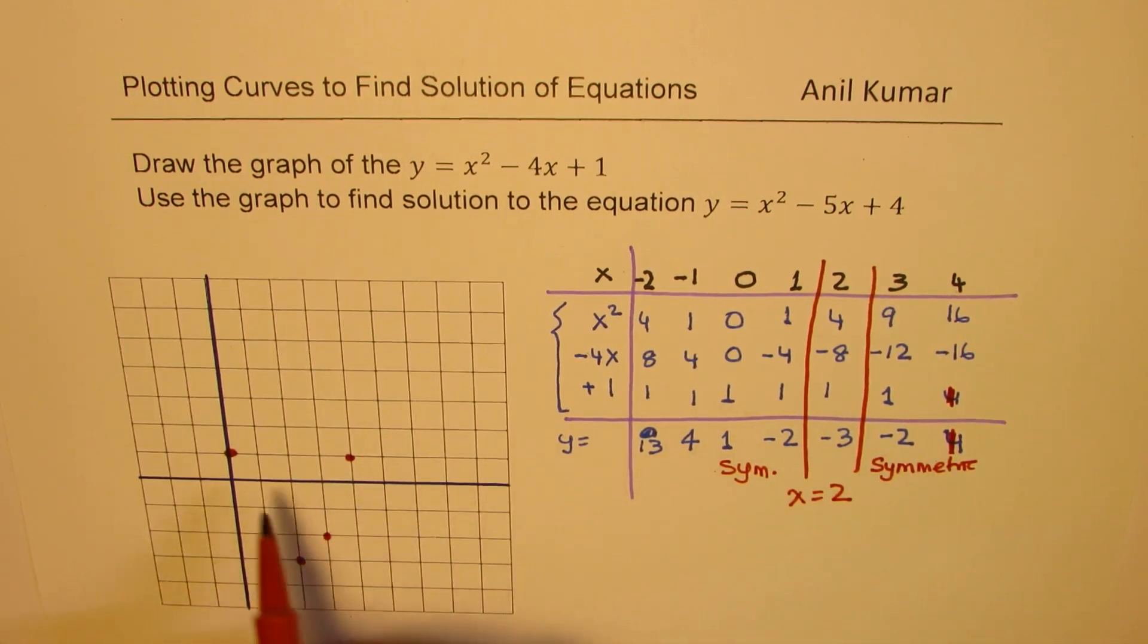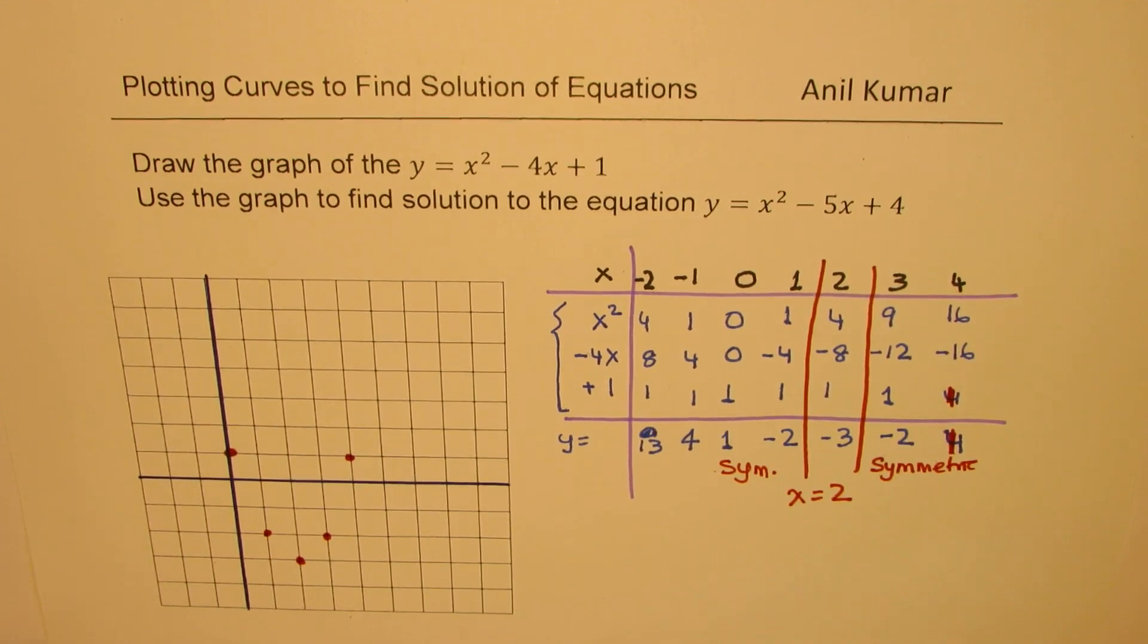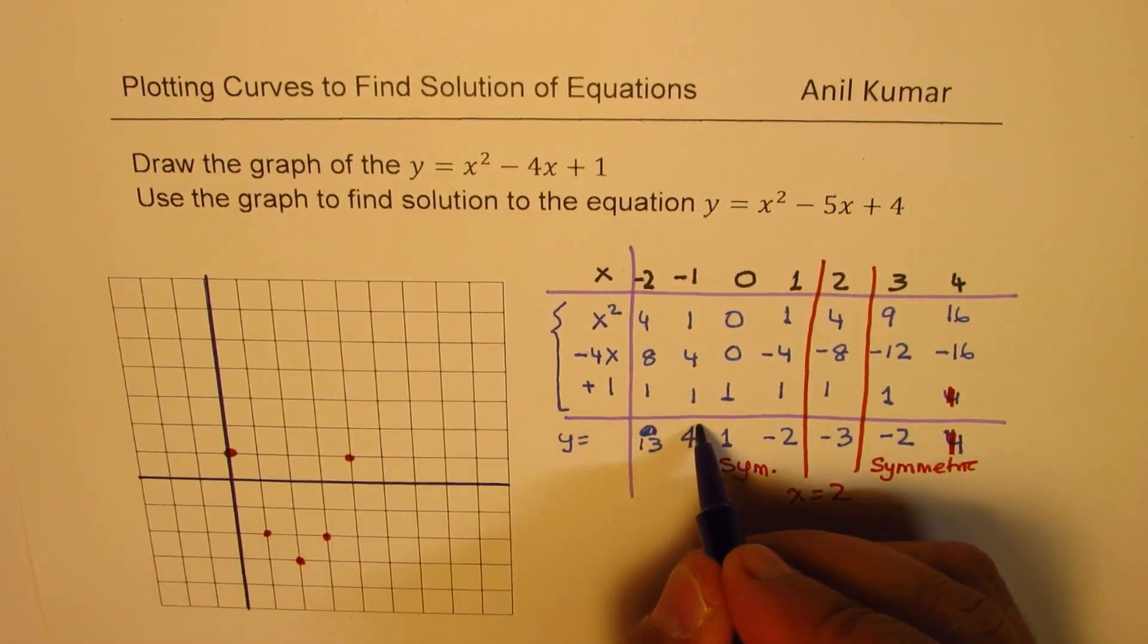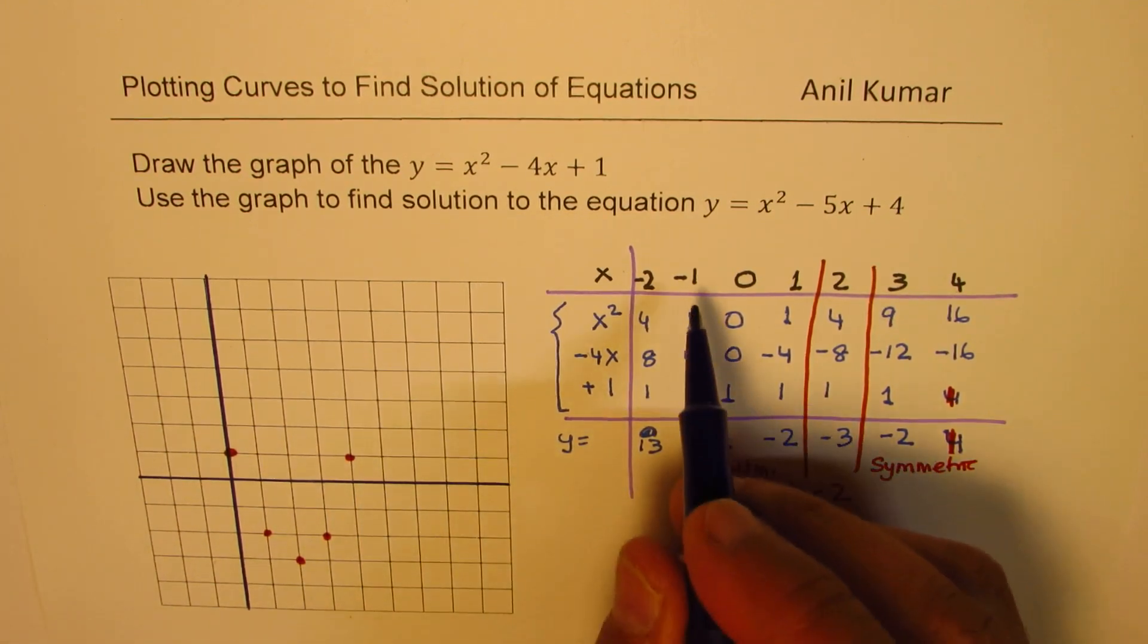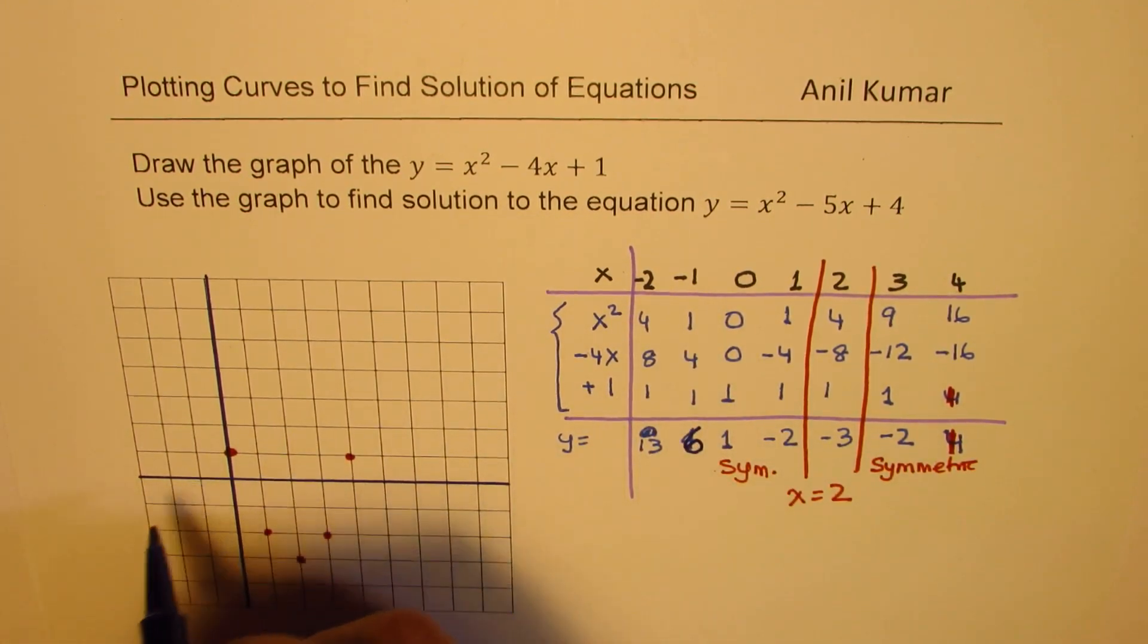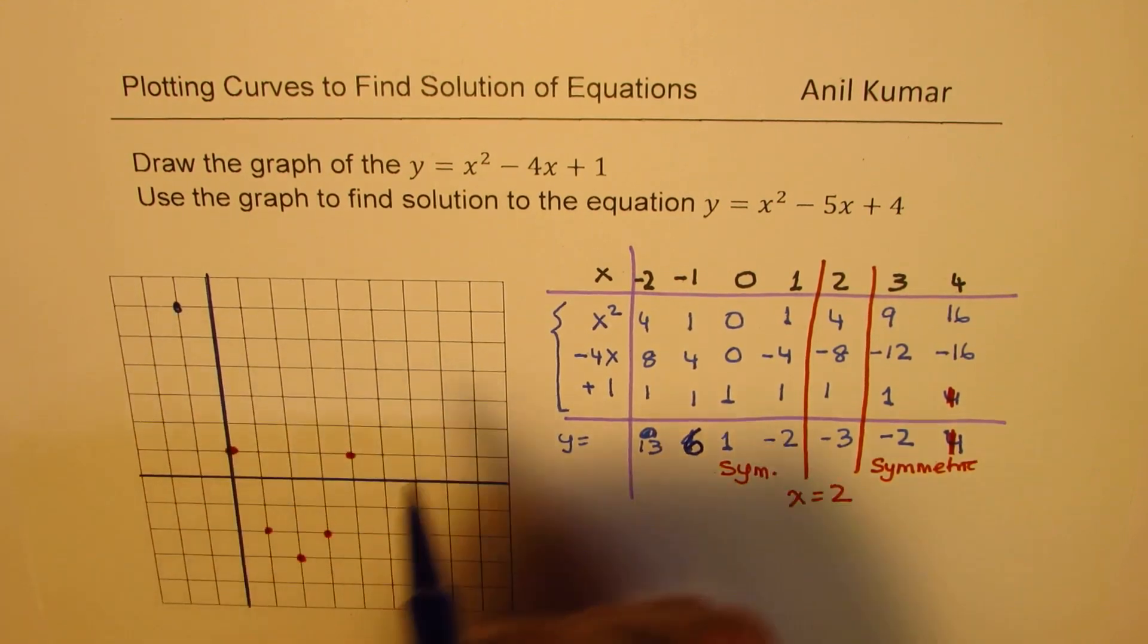Then the next value on this side we calculate it as 4. Now this calculation is also wrong. 1 plus 4 plus this has to be 6. I'm sorry. A lot of calculation mistakes here. So the next point here for minus 1 will give me 6. So 1, 2, 3, 4, 5, 6. That is the point.